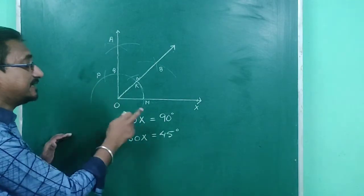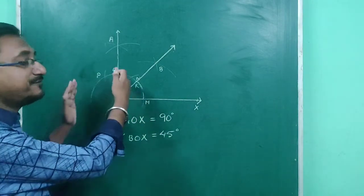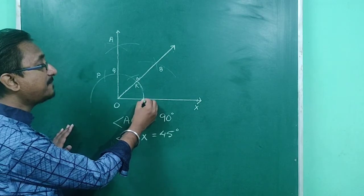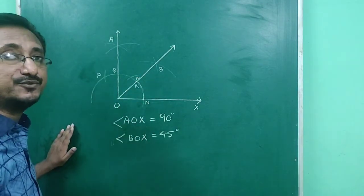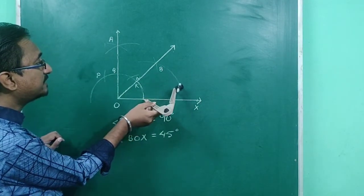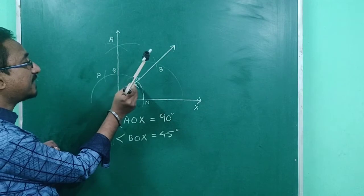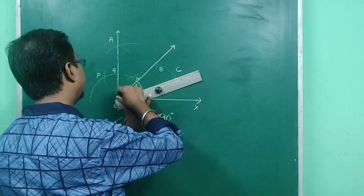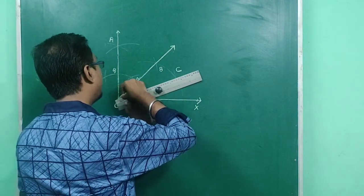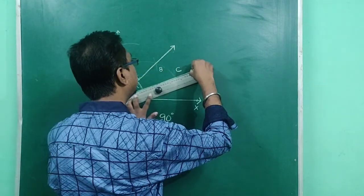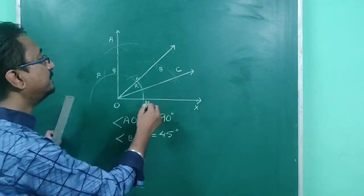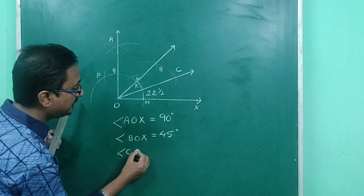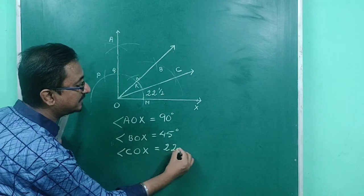Now let's construct angle 22.5 degrees. 22.5 degrees is the bisector of angle 45 degrees. Taking centers M and R, we will construct angle 22.5 degrees. Taking center M, I have drawn an arc here, and again taking center R I have drawn another arc which cuts the previous arc, suppose at C. We have drawn a ray from O passing through C, and this results in angle 22.5 degrees. So angle COX is equal to 22.5 degrees.